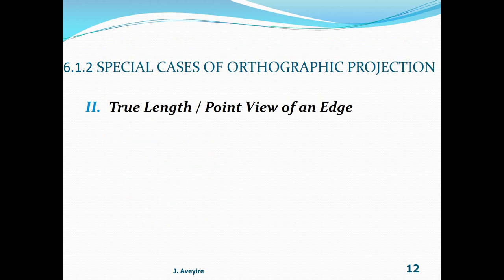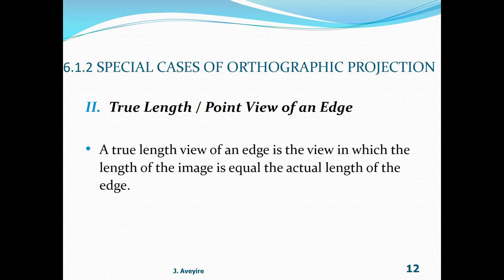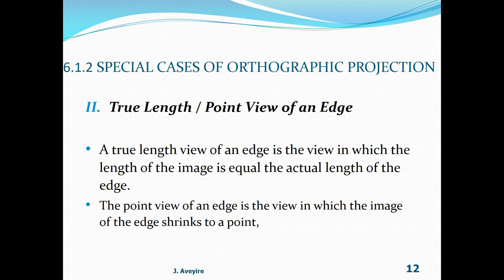The true length view of an edge is the view in which the length of the image is equal to the actual length of the edge, taking into consideration the scale factor to which it has been drawn. The point view of an edge is the view in which the image of the edge shrinks to a point.